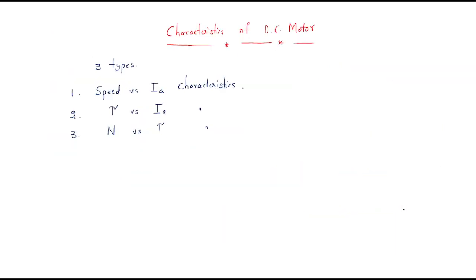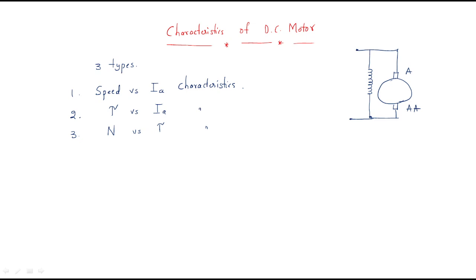The next topic is the characteristics of the DC motor. Before discussing the characteristics, we will have a brief introduction. A DC motor takes DC supply as input and gives mechanical power as output. For example, in a DC shunt motor, we have the field and the armature; supplying voltage causes current to flow and the motor gives mechanical output.